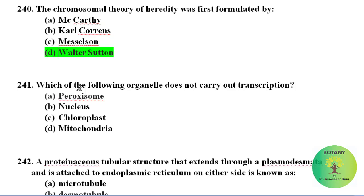Which of the following organelles does not carry out transcription? Among nucleus, chloroplast, and mitochondria, transcription occurs in all three. But in peroxisome, transcription is not carried out.